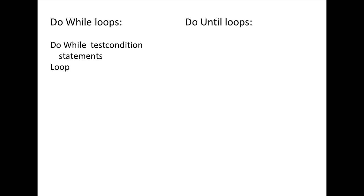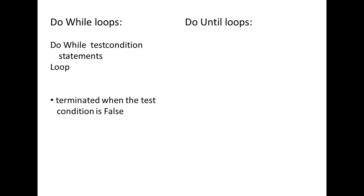DO WHILE loops begin with DO WHILE followed by a test condition and end with the loop statement. The statements inside the loop are executed over and over while the test condition is true. A DO WHILE loop is terminated when the test condition is false.